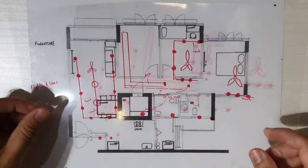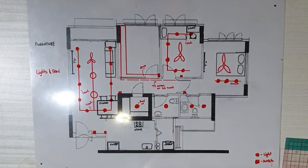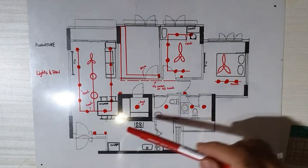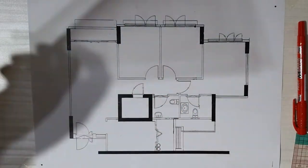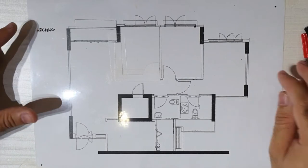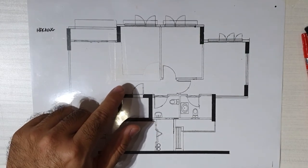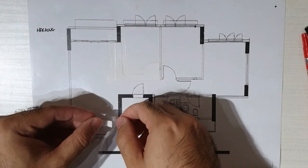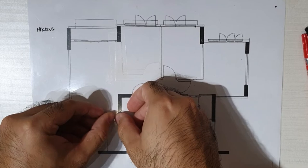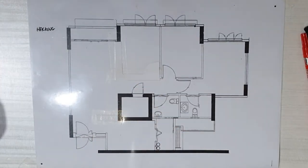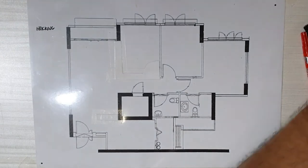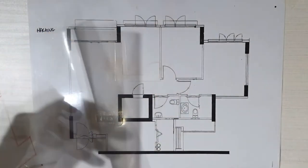I've also prepared a completed fans and lights layer so you can see how that looks. Now I'm going to think about walls I want demolished — I don't like this wall over here, so I'm going to demolish that. I have another layer which I call the hacking layer. As you can see, I just tape a piece of paper over the walls that I want hacked. When I pass this to my ID or contractor, they know exactly which walls are to be hacked.